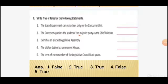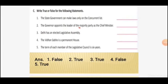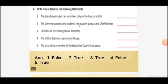Part C: write true or false for the following statements. One — the state government can make laws only on the concurrent list: False. Two — the governor appoints the leader of the majority party as the chief minister: True. Three — Delhi has an elected legislative assembly: True. Four — the Vidhan Sabha is a permanent house: False. Five — the term of each member of the legislative council is 6 years: True.